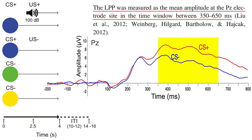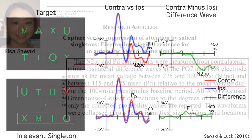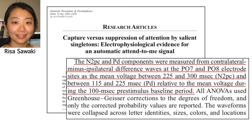In Felix's study, he could use previous research to choose the time window and electrode site. But Risa couldn't do that. Before she saw the data, she had no idea that she'd see a PD component. So she couldn't use previous research to make an a priori decision about how to analyze the PD effect. So she just used the same electrode sites for the PD as she used for the N2PC, and she picked a time window that seemed reasonable. But that's not really good enough.